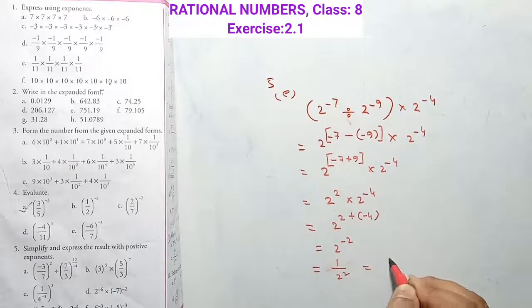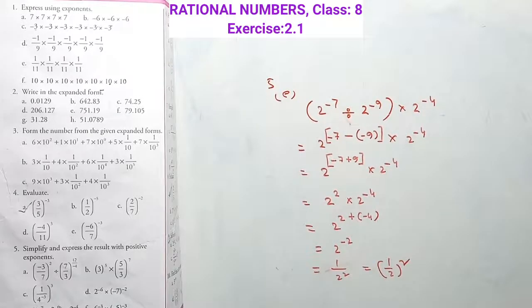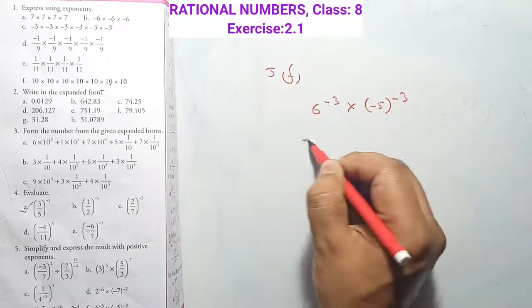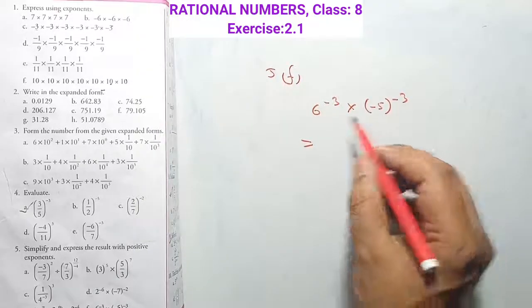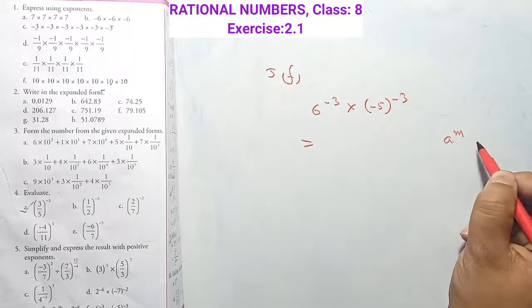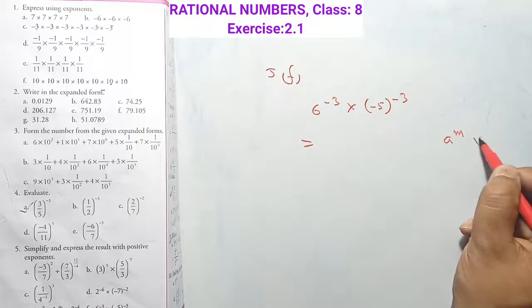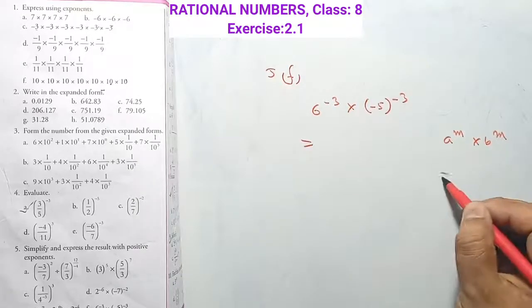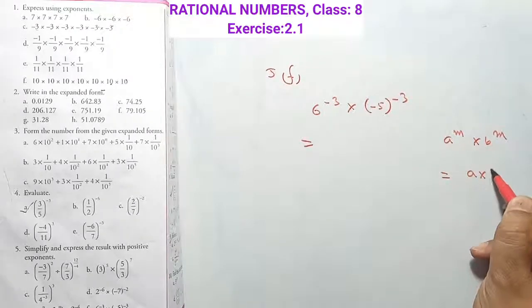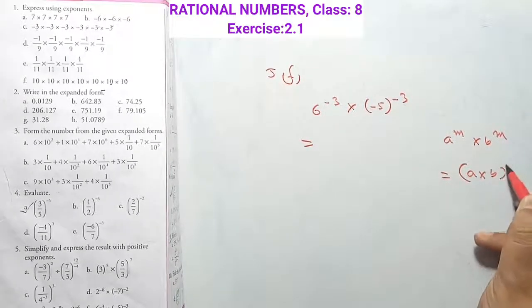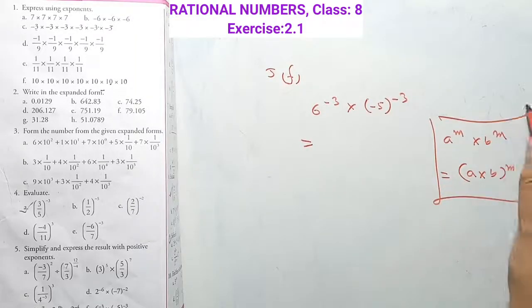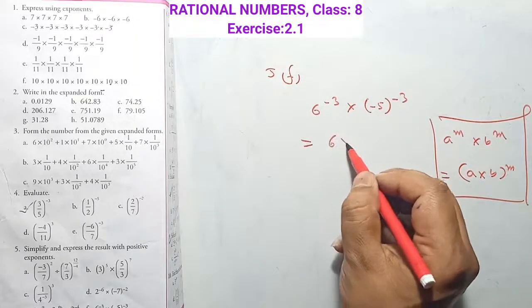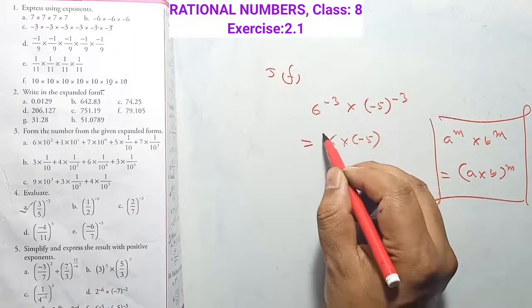2 power minus 2 means 1/2 squared, or we can write it as (1/2) whole squared. For the last one: bases are different but powers are same. Using formula a^m × b^m = (a×b)^m. So combining: 6 into (−5) to the power minus 3.